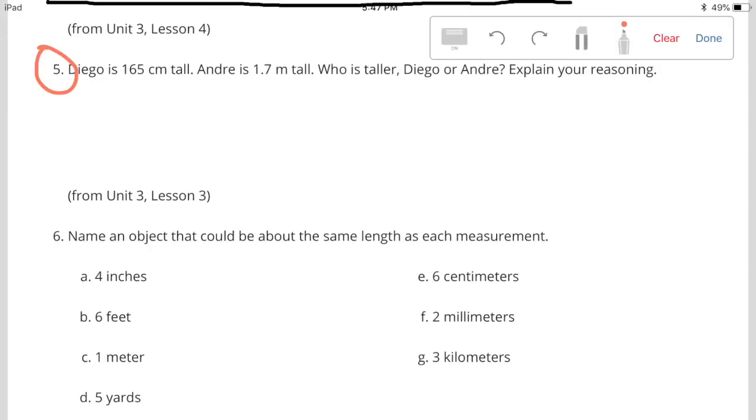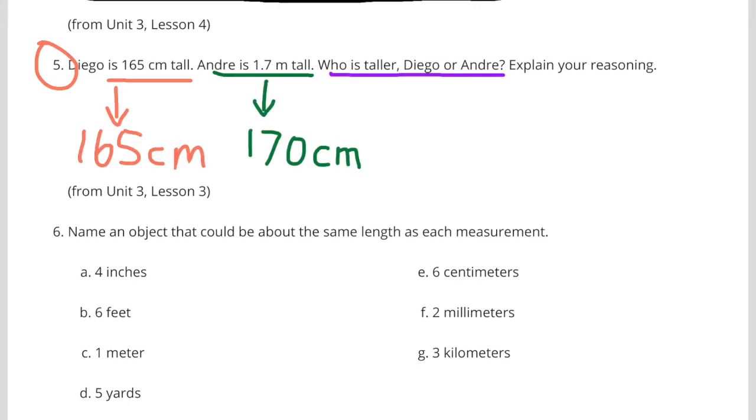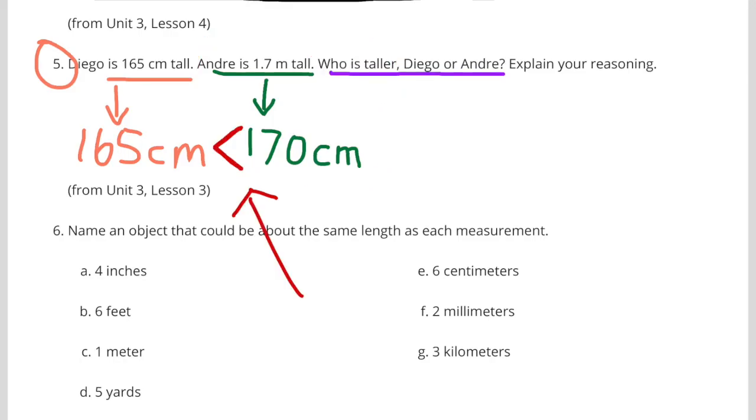Number 5: Diego is 165 centimeters tall. Andre is 1.7 meters tall. Who is taller, Diego or Andre? Explain your reasoning. Well, when you compare 165 centimeters with 1.7 meters, 1.7 meters is actually 170 centimeters. 170 centimeters is taller than 165 centimeters. Andre is taller than Diego.